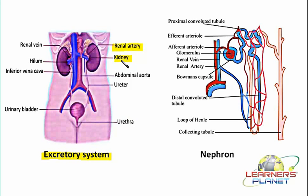This is how the excretory system is present in our body. Now the question is how the urine is formed — what is the mechanism behind urine formation? Urine formation occurs inside the kidney, and the functional unit of the kidney is known as the nephron. The nephron consists of three major parts: the Bowman's capsule, the renal tubule, and the collecting duct.